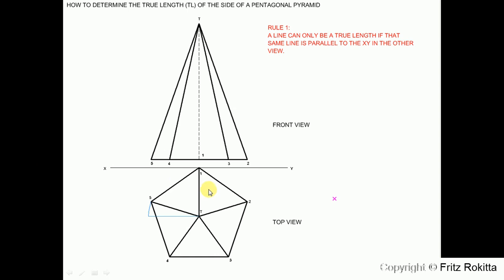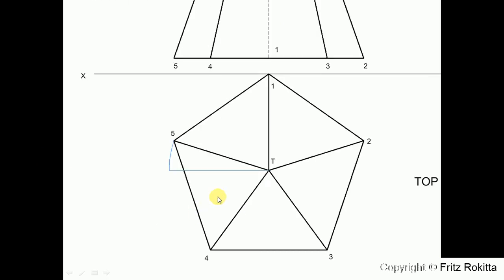Step 2. Place your compass at the tip of your pyramid, stretch it to base corner 5 and draw an arc to intersect with the parallel line.